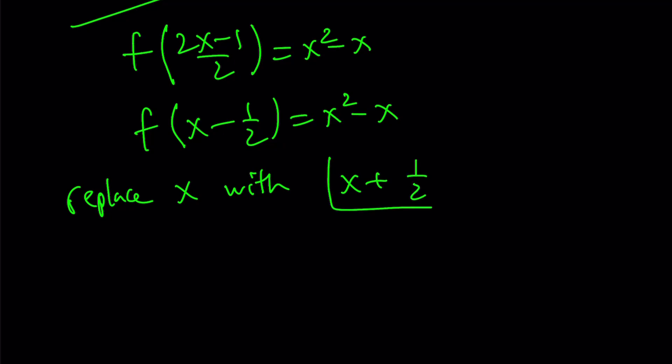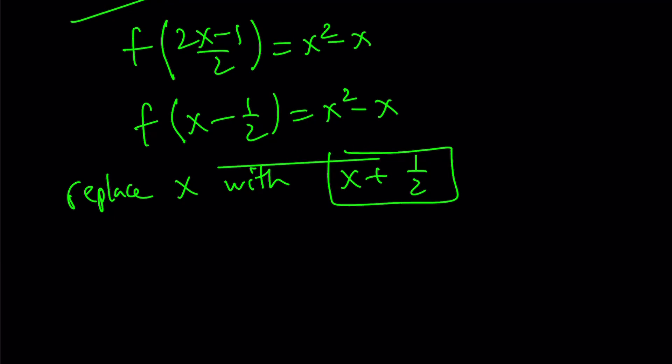Why? Because if I do, then I'm going to get f of x, because 1 half and negative 1 half are opposites. So we can go ahead and use this here. We're going to get f of x plus 1 half minus 1 half. This is going to give us f of x.